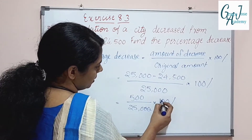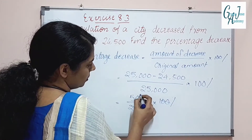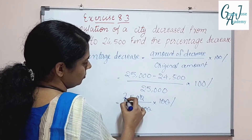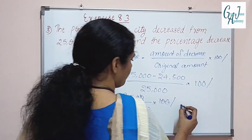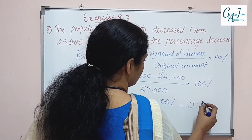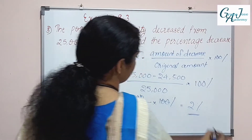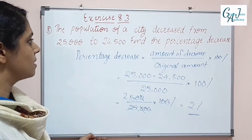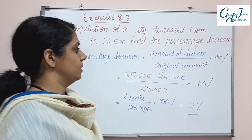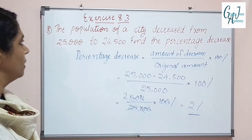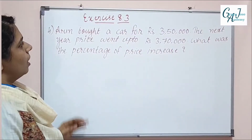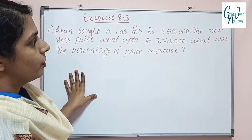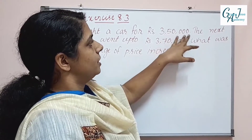The percentage decrease is equal to 2%. That is the amount of decrease calculated from the population figures.